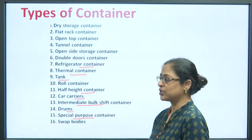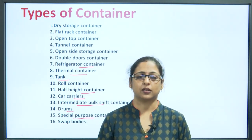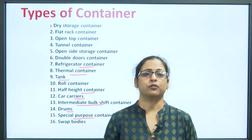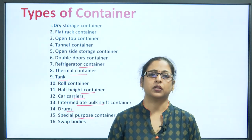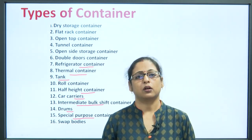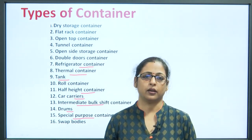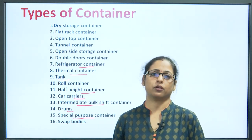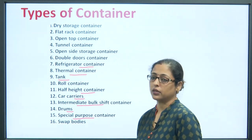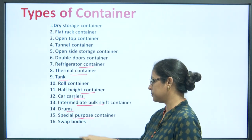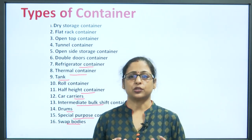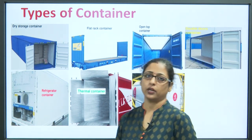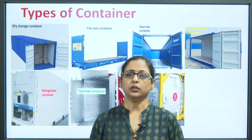Special purpose containers have a very specific body structure required for transporting slightly different kinds of material — for example, hazardous materials or metallic things where opening the container might lead to pollution, spread of vibrations, or radiation. Swap bodies are containers whose structure can be transformed from a dry storage container to a flat rack or open top container, meaning we can change the structure according to the type of requirement.